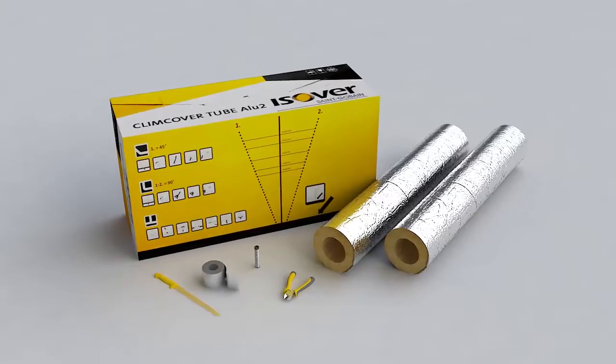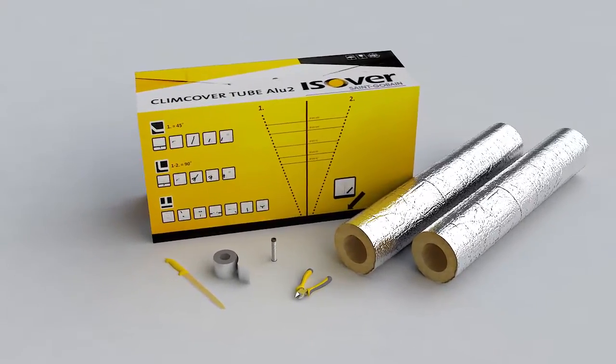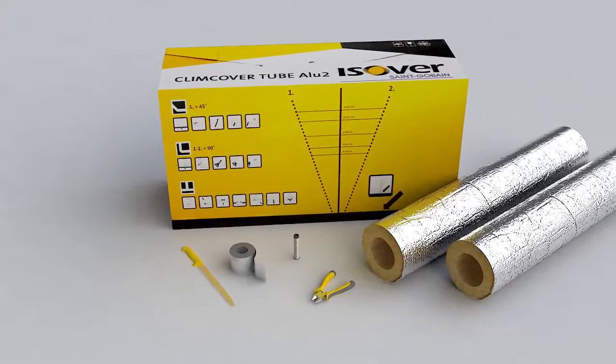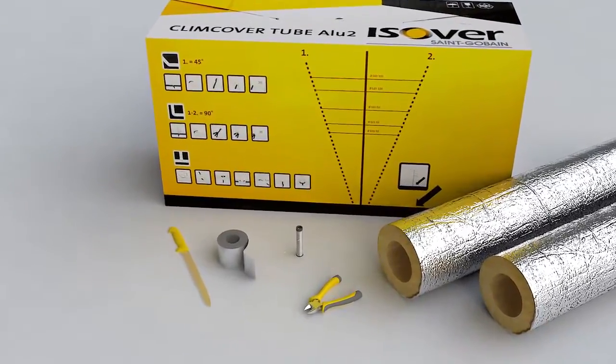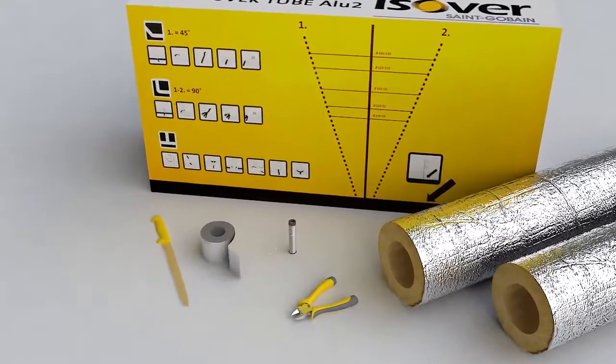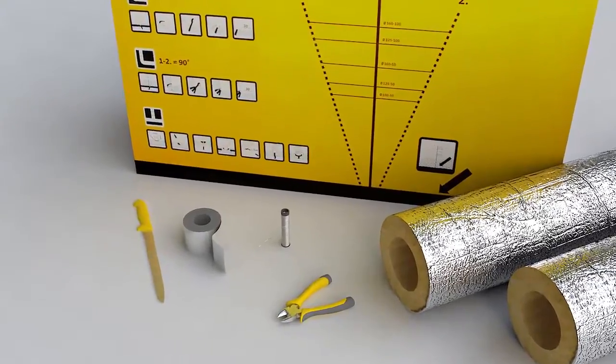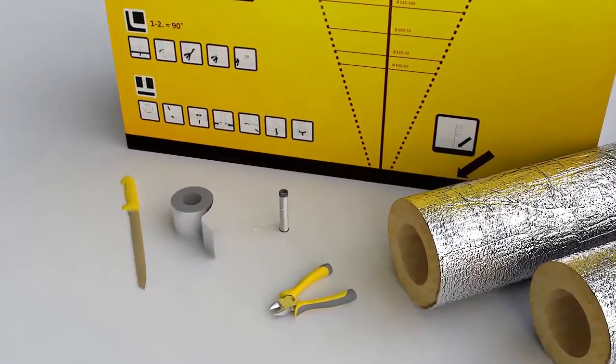Installing the product is easy. You only need Isover Klim Cover Tube Duct Insulation, the instructions on the packaging, a mineral wool knife, 75 millimeter AL Installation Tape, 0.9 millimeter stainless steel binding wire and side cutting pliers.